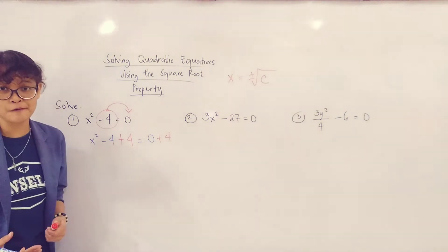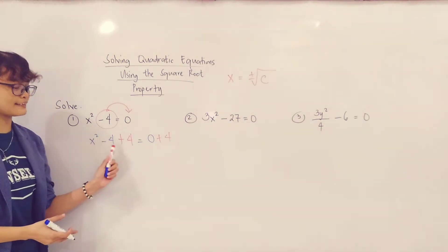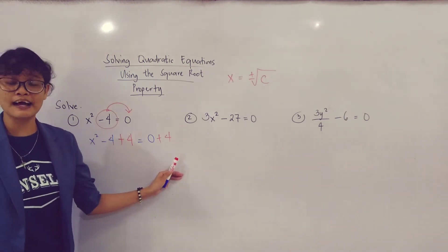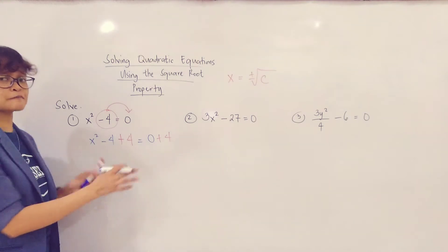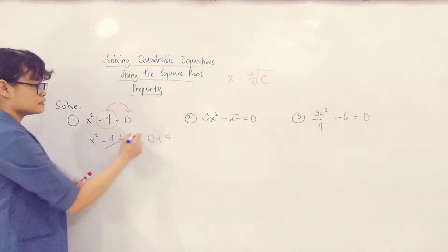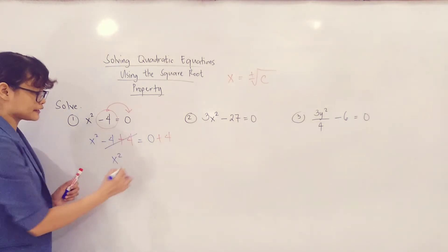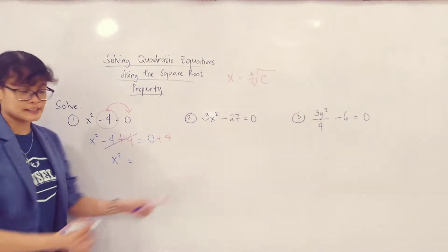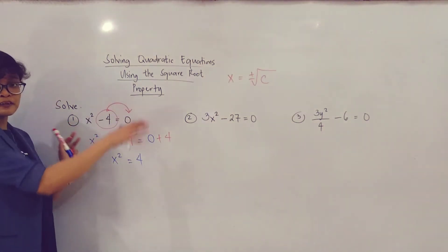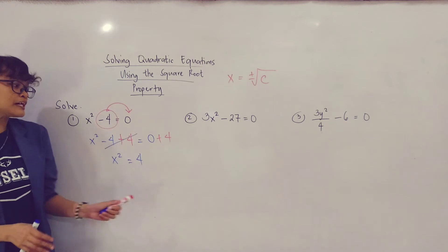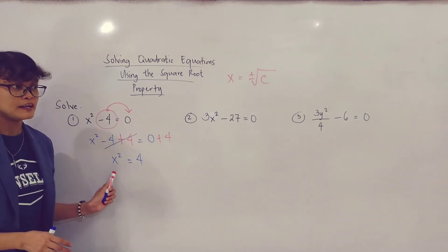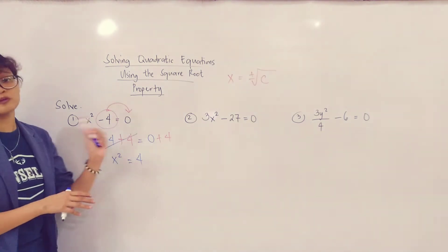Yan yung addition property of equality — whatever you added sa the left side ng equation mo, yun din yung i-add mo sa right side ng equation. After that, simplify. Negative 4 plus 4 is equal to 0, kaya ang matitira na lang dito ay x squared equals to 4. Next, pagkatapos mo ilipat yung constant number, ang next na gagawin mo ay sisiguraduhin mo na ang coefficient ng variable ay positive 1. Kasi doon mo lang magagamit yung Square Root Property.